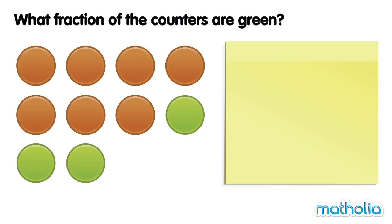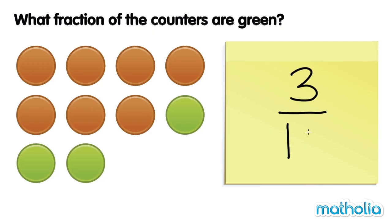What fraction of the counters are green? There are one, two, three green counters. There are ten counters altogether. We can write the fraction of green counters as three over ten, or three tenths. Three tenths is in its simplest form. So we can say three tenths of the counters are green.